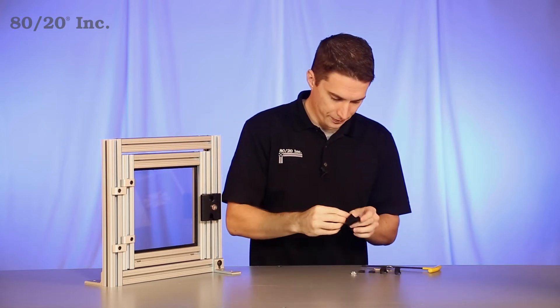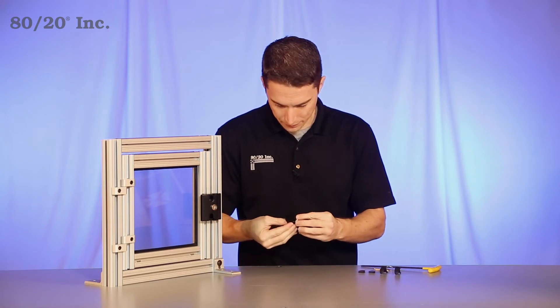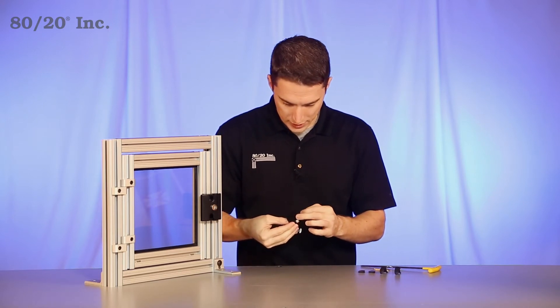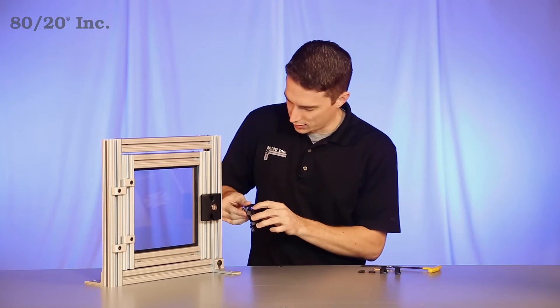We're going to take one last bolt, feed it through, and put one last T-nut on. Once we've got that preloaded on, we're going to drop it right into the T-slide.